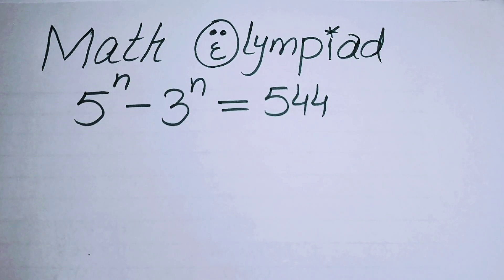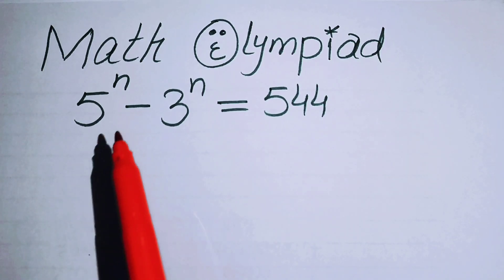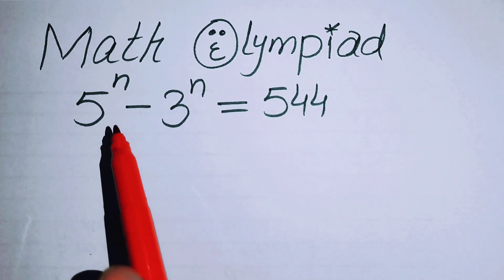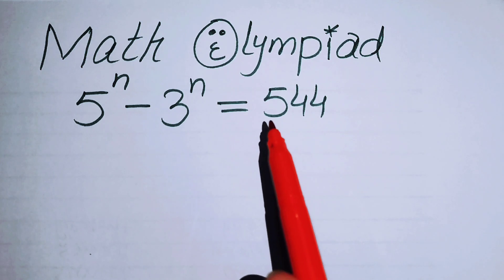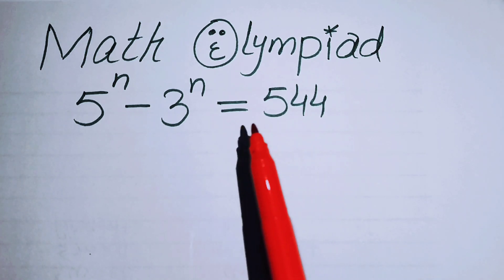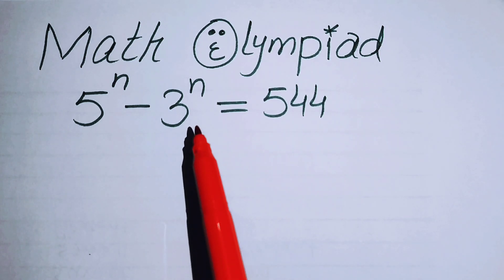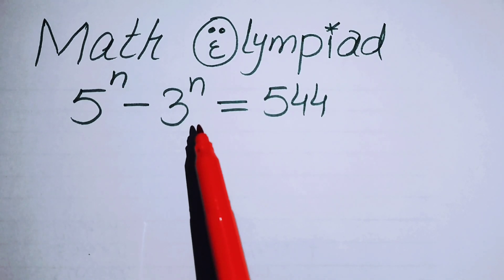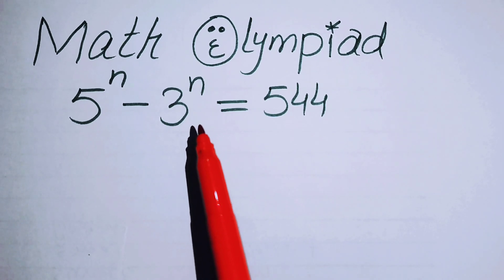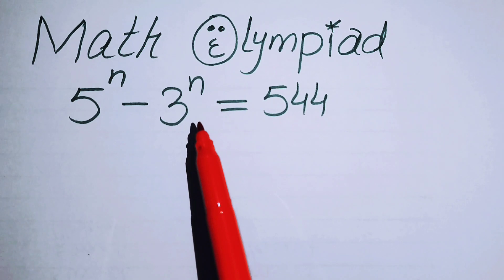Hello everyone, welcome back to the Map of Mathematics. In this video we are going to solve this nice algebra problem: 5 to the power of n minus 3 to the power of n equals 544. We will solve this problem for the value of n using a reverse engineering method — a very different technique I hope you will like.